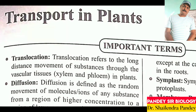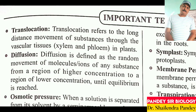Translocation is called so. Now, diffusion is defined as the random movement of molecules or ions of any substance from a region of higher concentration to a region of lower concentration — the movement of molecules from higher concentration to lower concentration sites.